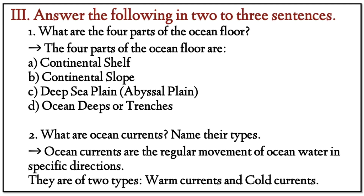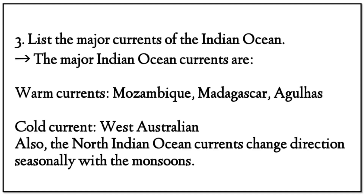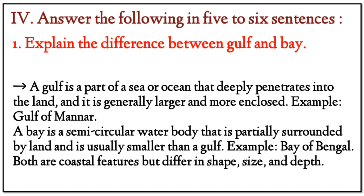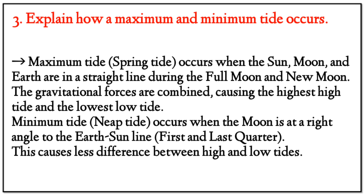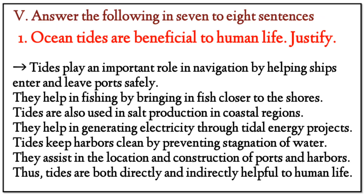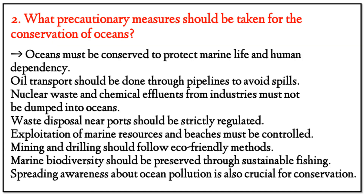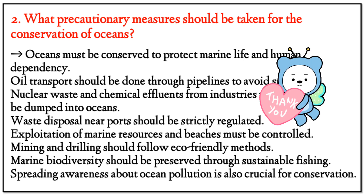Question 3: Answer the following in two to three sentences — questions one and two with answers. Slide also includes question 3: list the major currents of the Indian Ocean, and its answer. Question 4: Answer the following in five to six sentences — explain the difference between gulf and bay; list the significance of the continental shelf; explain how maximum and minimum tides occur, with answers. Question 5: Answer the following in seven to eight sentences — first: ocean tides are beneficial to human life, justify; second: what precautionary measures should be taken for the conservation of oceans, with answers.